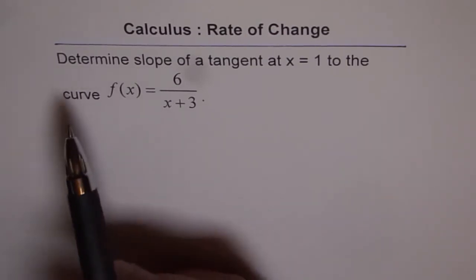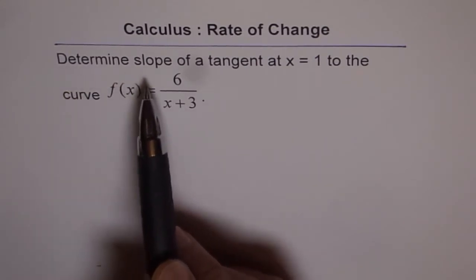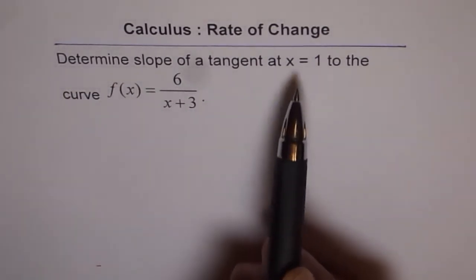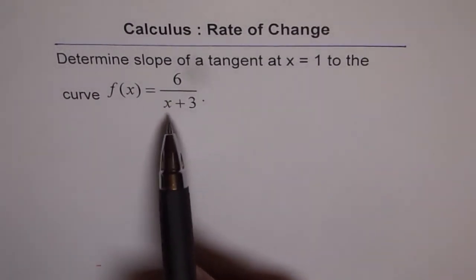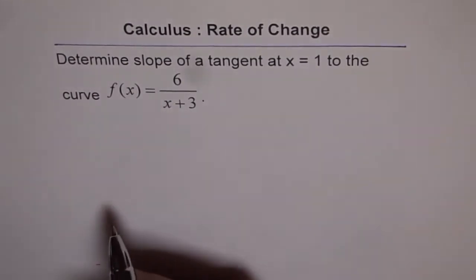The question here is, determine slope of a tangent at x = 1 to the curve f(x) = 6/(x+3).